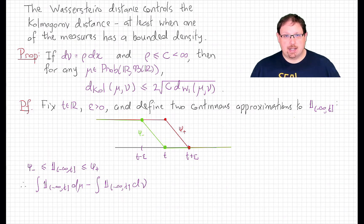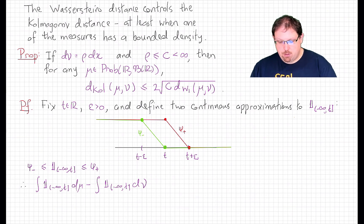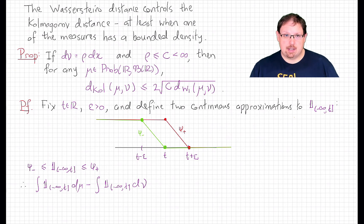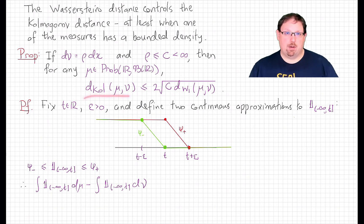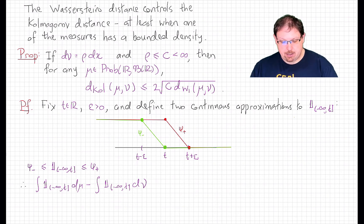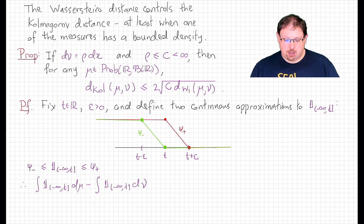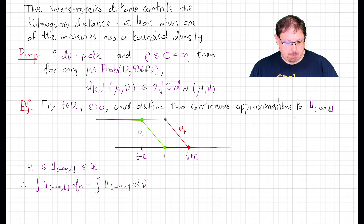Here's the proposition. If ν is an absolutely continuous measure with a bounded density — the density with respect to Lebesgue measure is bounded by some finite constant c everywhere on the real line — then for any other probability measure, absolutely continuous or not, the Kolmogorov distance is less than or equal to 2 times the square root of c times the Wasserstein distance. This is actually remarkable: the Wasserstein distance, which by one equivalent formulation is the L1 norm between the two CDFs, controls the supremum norm between the two CDFs. It's not that surprising though, because we're imposing a constraint on the density, which is the derivative of the CDF — this has the flavor of a Sobolev-type theorem.